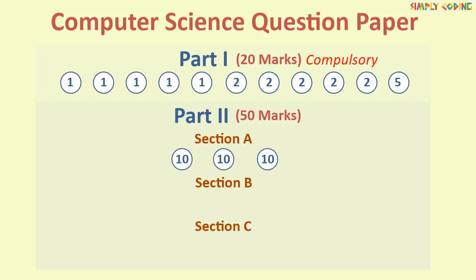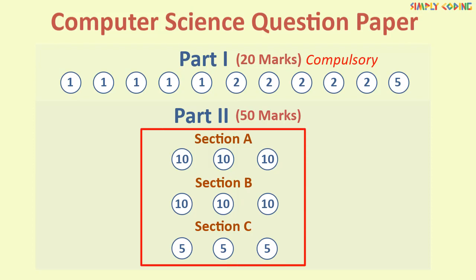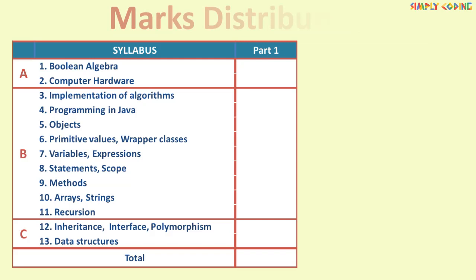A has 3 questions of total 10 marks each, but each of these questions is subdivided into 1 mark, 2 mark, 3 mark, 4 mark or 5 mark questions. Section B has 3 ten mark programming questions. And section C has 3 five mark questions. If you see, each of the sections in part 2 has 3 questions and you have a choice to attempt any 2 of the 3.